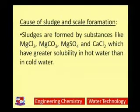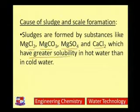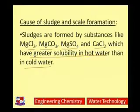Sludges are formed by substances like magnesium chloride, magnesium carbonate, magnesium sulfate, and calcium chloride. All these substances have greater solubility in hot water but less solubility in cold water. When they reach the cooler region of the boiler, they precipitate out and are thrown out in the form of sludge.